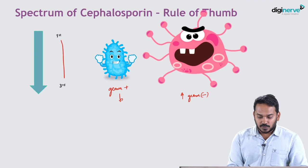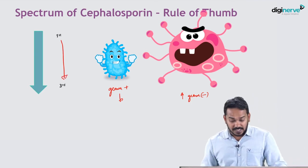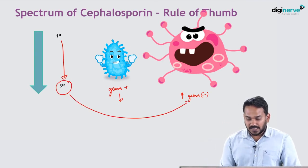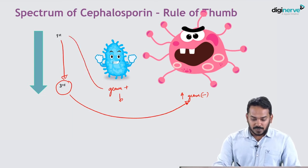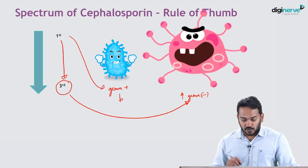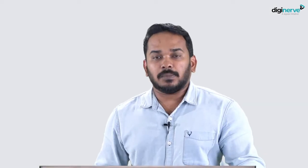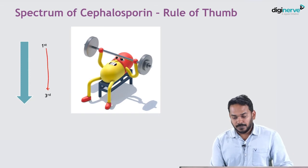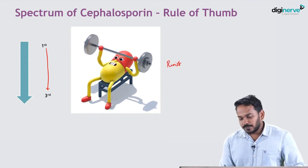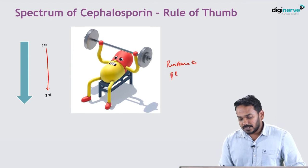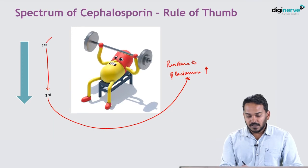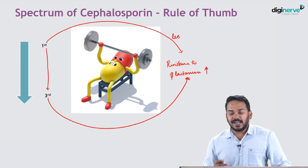So the third generation cephalosporins have more activity against gram-negative organisms, and the first generation has more activity against gram-positive organisms — this can be considered as a rule of thumb. Also, as you go from first generation to third generation, resistance to beta-lactamase increases, so the third generation is more resistant to beta-lactamase whereas the first generation is less resistant.